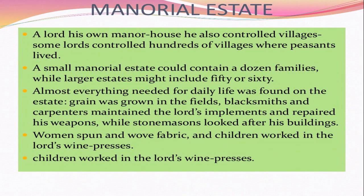Talking about the manorial estate: a lord had his own manor house and also controlled villages. Some lords controlled hundreds of villages where peasants lived. A small manorial estate could contain a dozen families while a larger estate might include 50 to 65. Almost everything needed for daily life was found on the estate. Grain was grown in the fields; blacksmiths and carpenters maintained the lord's implements and repaired his weapons, while stonemasons looked after his buildings. Women spun and wove fabrics, and children worked in the lord's fine places.